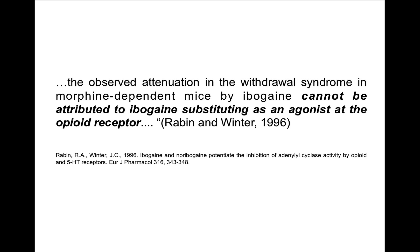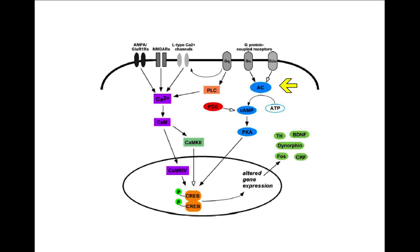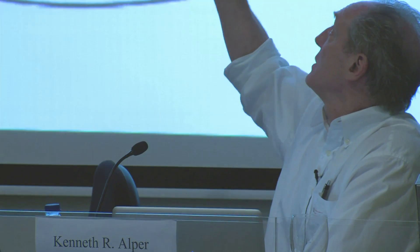The observed attenuation of the withdrawal syndrome of morphine-dependent mice by ibogaine cannot be attributed to ibogaine substituting as an agonist at the opioid receptor. This is not an agonist action — the agonist action would occur up here at the receptor. This is downstream. If morphine binds up here it shuts this down, but morphine is not binding and ibogaine has no intrinsic activity in terms of activating this receptor. This is due to an action on adenylate cyclase itself — we're getting beyond the receptor. This is fundamentally new pharmacology.